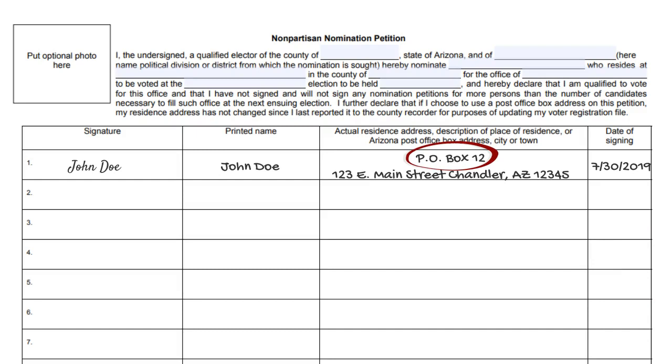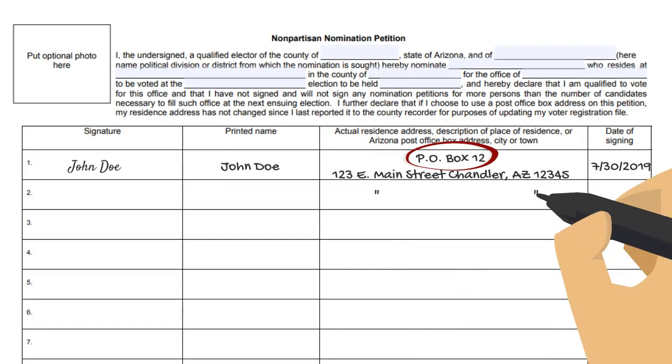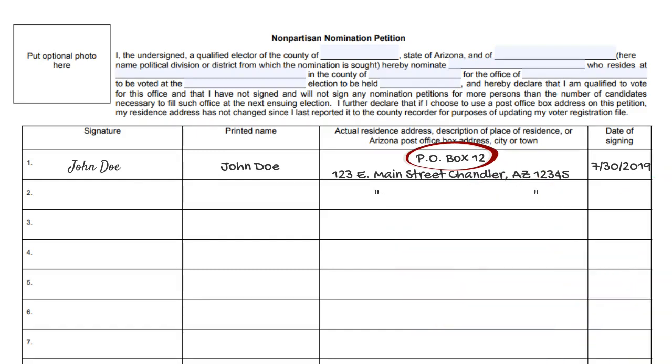The date includes the month, day, and year. Ditto marks will be accepted in the address and date column as long as the line being repeated is correct.